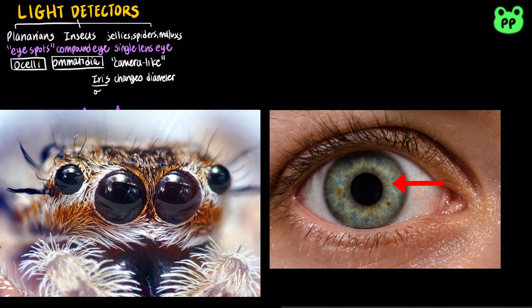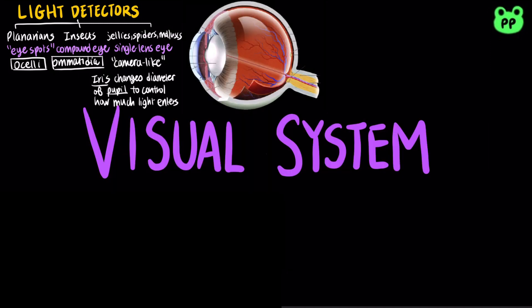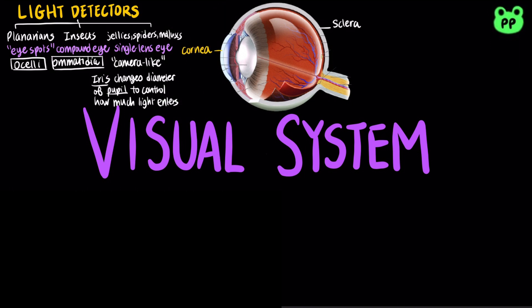The iris changes the diameter of the pupil to control how much light enters. The main parts of a human eye include a white outer layer called sclera, which forms the transparent cornea. Beneath the sclera is the pigmented layer called choroid, which forms the colored iris. The iris regulates the amount of light entering the pupil by changing size. The pupil is the hole in the center of the iris.